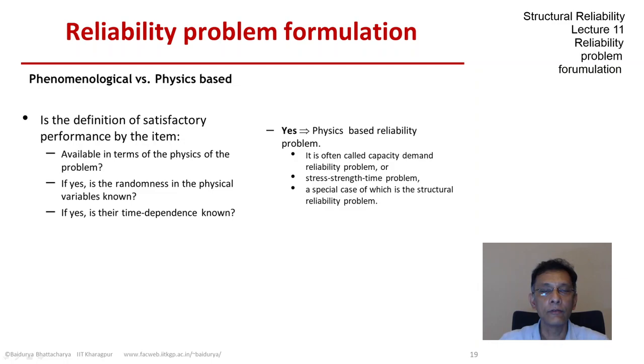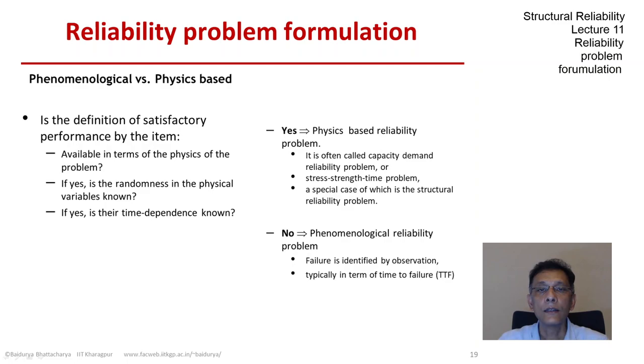And as I said, a special case of that is the structural reliability problem. If I do not have a physics-based definition of the satisfactory performance, what the item is supposed to do, if I can only observe it by testing phenomenologically, then I have a phenomenological reliability problem at hand. And failure, as I said, is identified by observations and typically described in terms of the time to failure, which is the only random variable that defines my problem. So the entire focus is on defining the random properties of the time to failure.